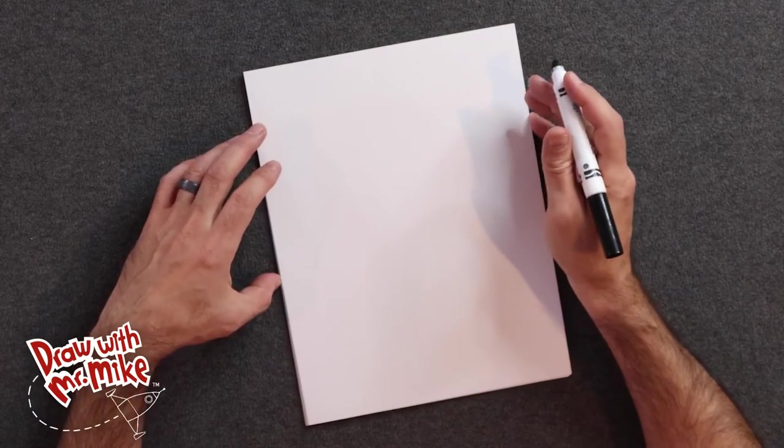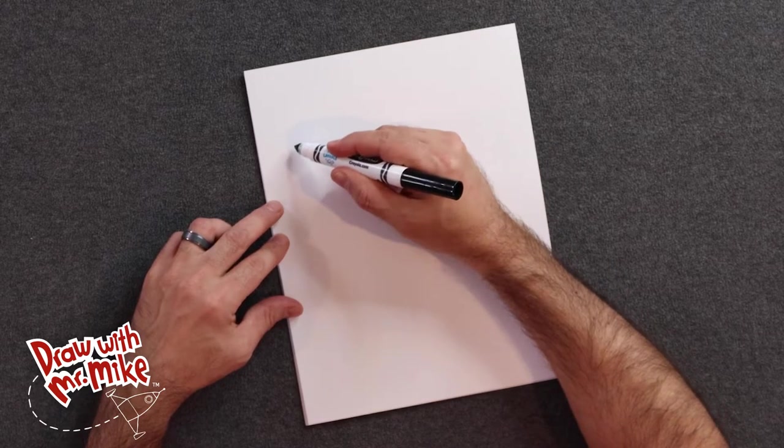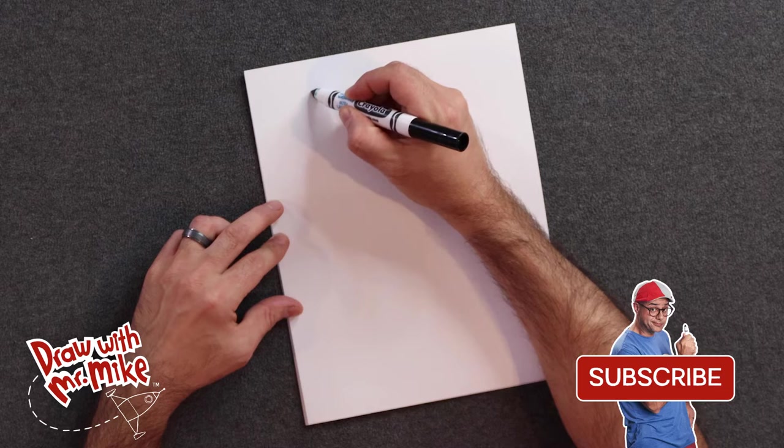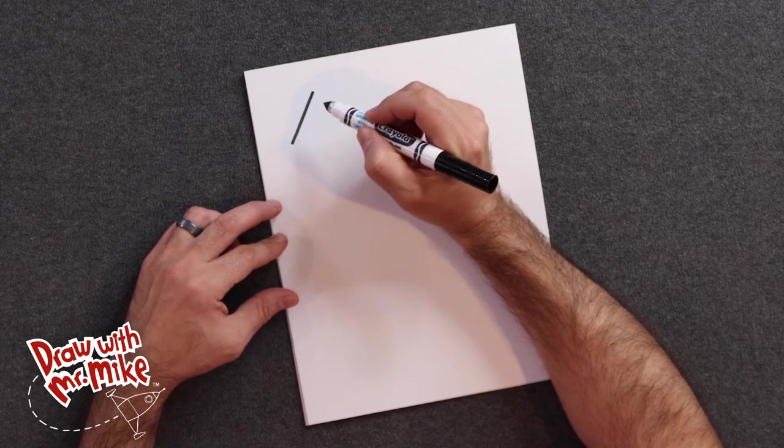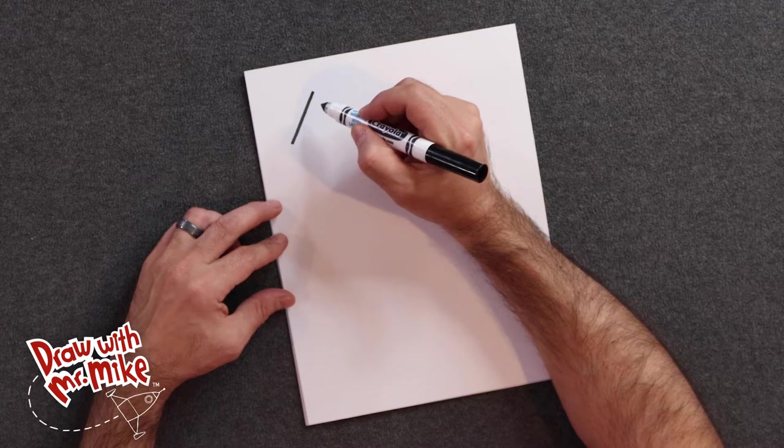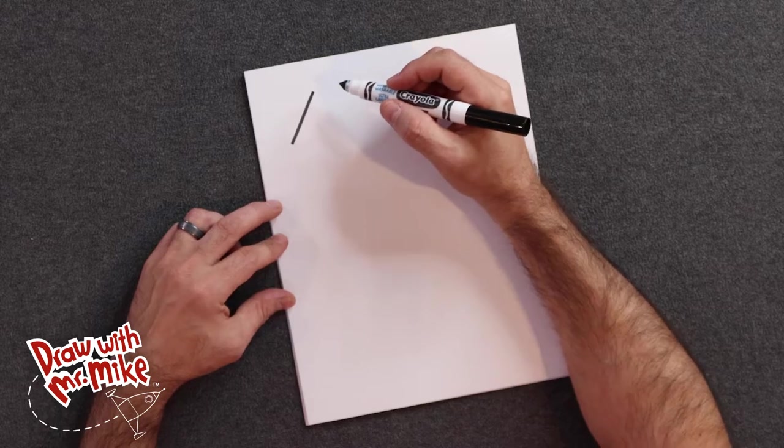All right, let's start off with a line right about here. We're going to draw a line on an angle. So start here at the top and then bring your line down like this. And remember, if you need to pause this video at any point to catch up, just pause the video and then you can catch up and join back in with us.